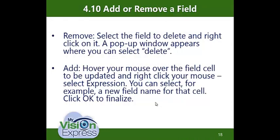Topic 4.10 — Add or Remove a Field. It works in much the same way. To remove, select the field, right-click, and choose Delete from the popup window. To add, hover your mouse over the field, right-click, and select Expression. You can then specify a new field name or choose from other options, then click OK to finalize.